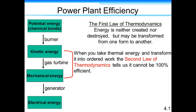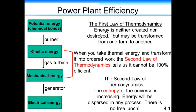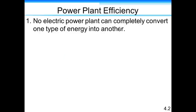Now, when you convert the thermal energy and transform it into work to push that gas turbine, the second law of thermodynamics tells us it cannot be 100% efficient. We can't take the energy from every particle that's released in terms of the maybe hot gas from burning the fuel and channel it 100% efficiently into turning the turbine. The second law of thermodynamics is telling us that entropy or the disorder of the universe is increasing. Energy will be dispersed in any process. There is no free lunch. You can't just transfer energy magically without losing some energy in the process.